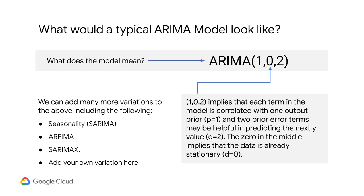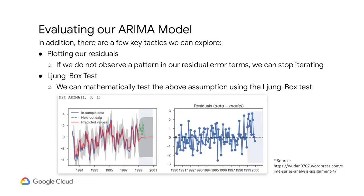We can add many more variations by including seasonality, giving us SARIMA, or by adding exogenous variables, giving us SARIMAX, and you can add your own variations. It should be clear by now that selecting model parameters for an ARIMA model is an iterative exercise. Evaluating each model with its unique set of P, D, Q parameters is key. Choosing useful PDQ values and adding seasonal effects is almost entirely a context-driven endeavor. There are a few key tactics we can explore.